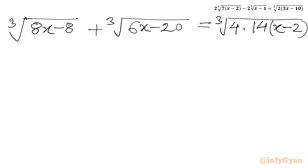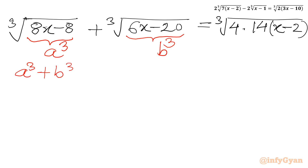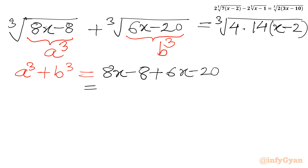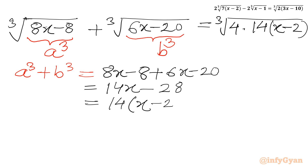Now I will use substitutions. Let the first radicand on the LHS be a cubed, and the second radicand be b cubed. I will calculate the value of a cubed plus b cubed: that is (8x minus 8) plus (6x minus 20), which equals 14x minus 28, or 14 times (x minus 2). So instead of 14 times (x minus 2) on the RHS, we can write a cubed plus b cubed.